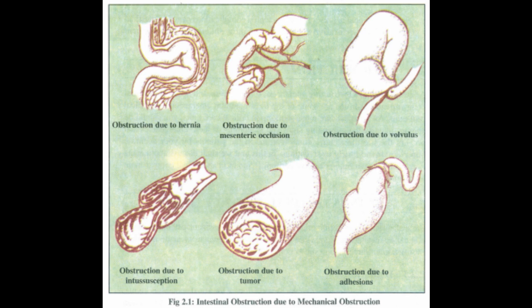2.2.2 Etiological Factors. The main etiological factors are: 1. Mechanical obstruction. A mechanical bowel obstruction is something that decreases the diameter of the bowel's opening from either the inside or outside. It physically blocks the passage and thereby movement of intestinal contents through the intestines, resulting in distension and accumulation of fluids and gas.